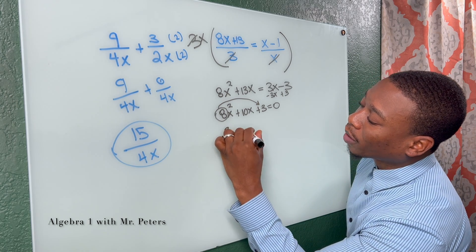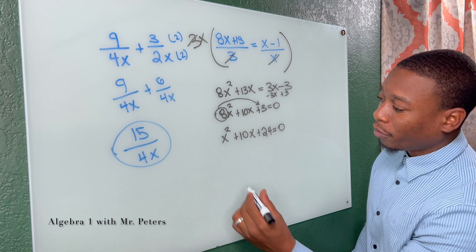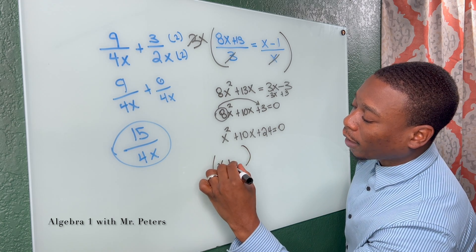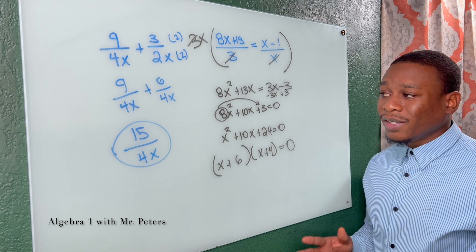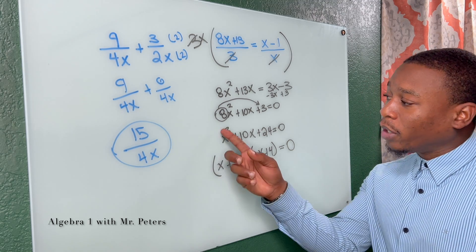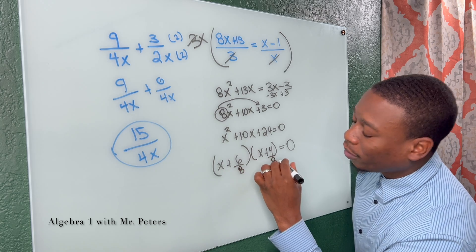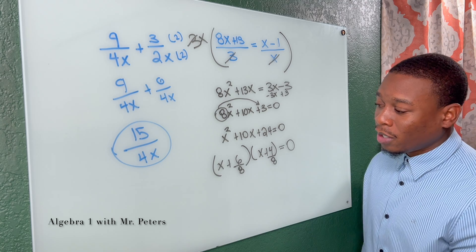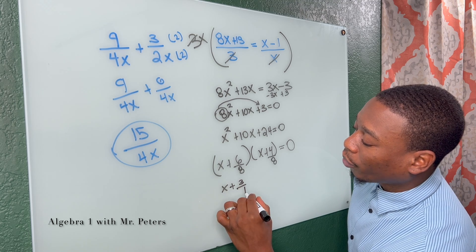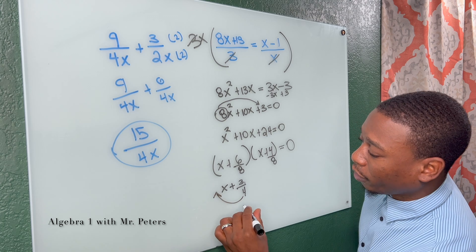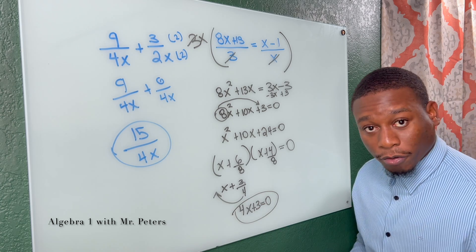So we have x squared plus 10x plus 24 is equal to 0. Now at this step it just turns into regular factoring. So we're going to have x plus 6 times x plus 4 is equal to 0. And this is where students always make a mistake — because we multiplied by 8, we have to now divide both factors by 8 and reduce the fraction. So this gives us 3 over 4, and since we can't get a whole number, we slide it in front to get 4x plus 3 is equal to 0. That's our first factor.